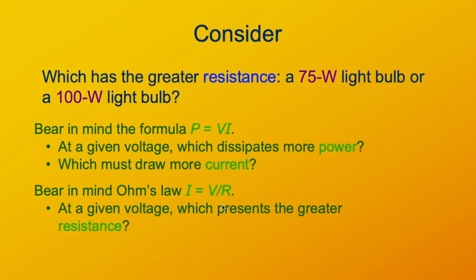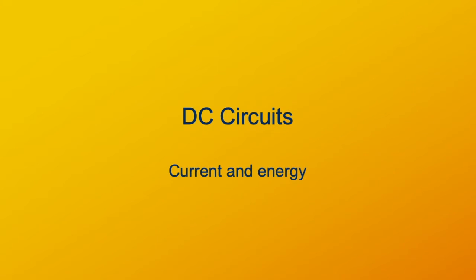The one with the greater current is the 100-watt bulb, because it has the greater power — so the 100-watt bulb has the least resistance. Now we'd like to look at DC circuits in a little more detail. This can be extremely complex; we're just going to touch the surface.